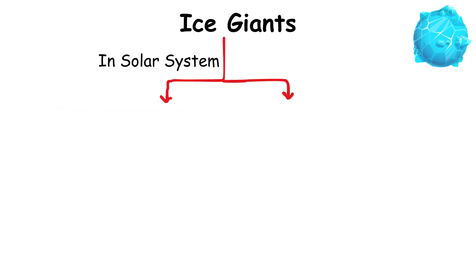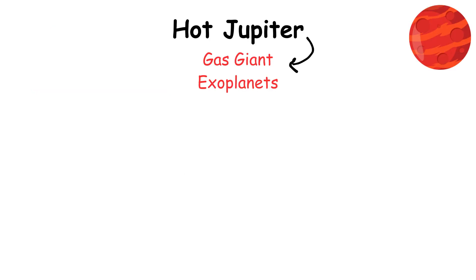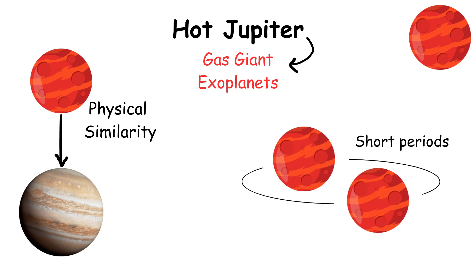Examples of ice giants include Uranus and Neptune. Hot Jupiters are a class of gas giant exoplanets that are inferred to be physically similar to Jupiter, but that have very short orbital periods.